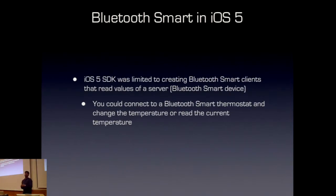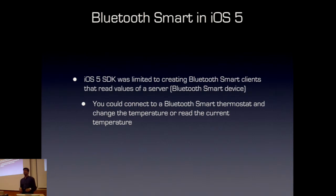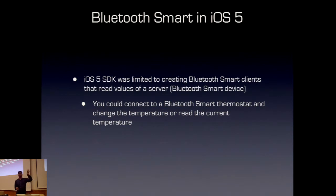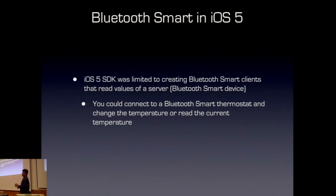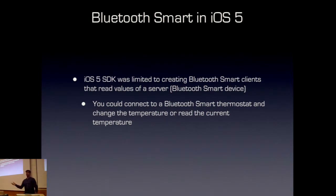The initial version of Core Bluetooth Framework allowed you to create Bluetooth apps that talk to a specific hardware, get data from it, and display it or do something meaningful with that data. For example, if I have a Bluetooth Smart thermostat in this room, I can read the room temperature from that thermostat and display it on the phone. As you walk around a home with multiple thermostats, you'll see the current temperature whenever you're near a different thermostat. That was possible from iOS 5 onwards.